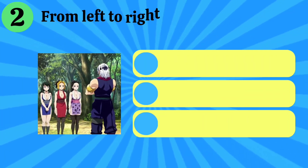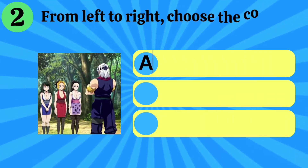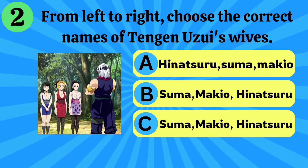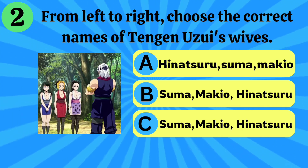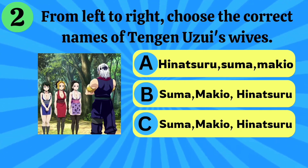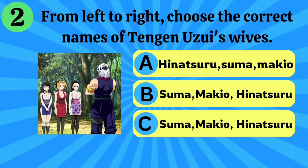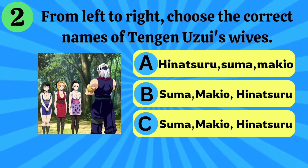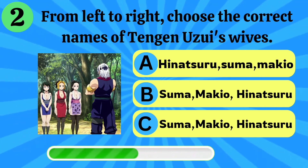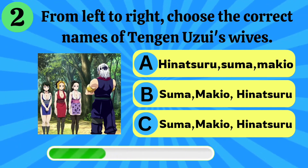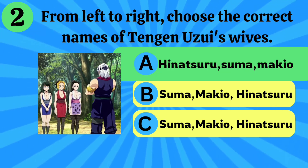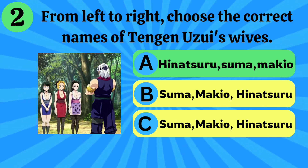Number 2. From left to right, choose the name of Tengen Uzui's wives. Option A: Hinatsaru, Suma, Makio. Option B: Suma, Makio, Hinatsaru. Option C: Makio, Hinatsaru, Suma. The right answer is Hinatsaru, Suma, Makio.